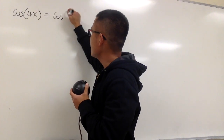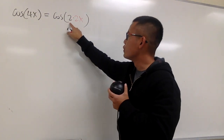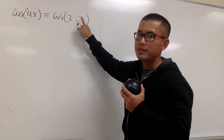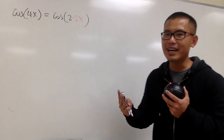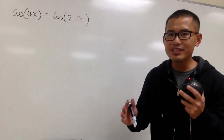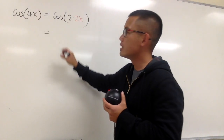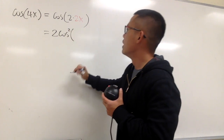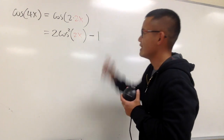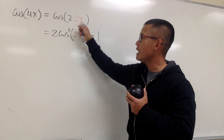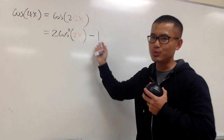So let me write this down as cosine of 2 times 2x. As you can see, we have the 2 times this angle, and the angle here is the 2x. We will be using the double angle identity for cosine. We have three versions, and keep in mind the direction — we want everything in terms of cosine x at the end. So the version I want to use is: this is the same as 2 times cosine squared of 2x, minus 1. This version of the identity has only cosine, so that's why I want to use it.